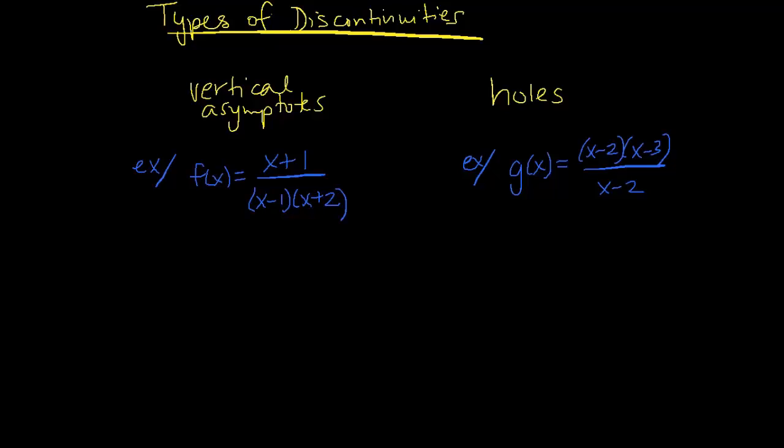In class you actually saw the first type, which is a vertical asymptote. So I'm giving you an example here of why you have a vertical asymptote. So here's our function f of x. Notice our numerator is a polynomial. Our denominator is a polynomial. So we have a rational function. So what we care about when we're looking at discontinuities is what makes the denominator zero.